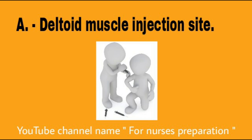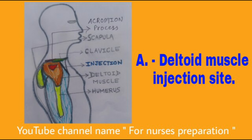Deltoid Muscle Injection Site: The deltoid muscle site for intramuscular injection is chosen if the amount of medicine is equal to 1 ml or less than 1 ml. Mostly this site is used for vaccination purposes. To locate the deltoid muscle, palpate the lower edge of the acromion process. From here, approximately 1 inch below is the injection site. As you can see in the diagram, the deltoid muscle injection site is shown in dark red just below the acromion process.